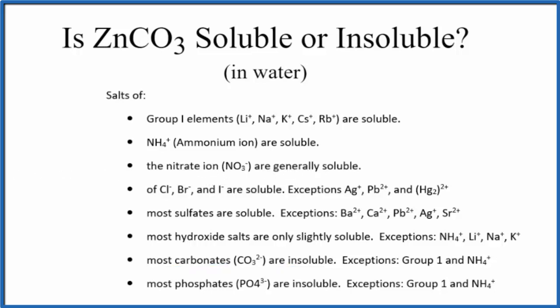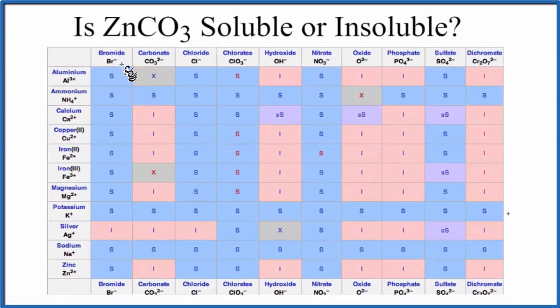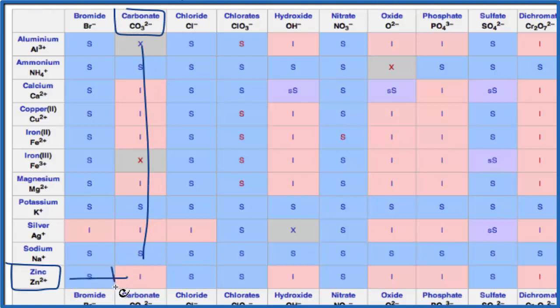We could also take a look at a solubility chart. So here's a solubility chart. We find zinc right down here at the bottom, Zn2+, and then carbonate, CO3 2-. We go down and over, and that I right there means that zinc carbonate is going to be insoluble in water.